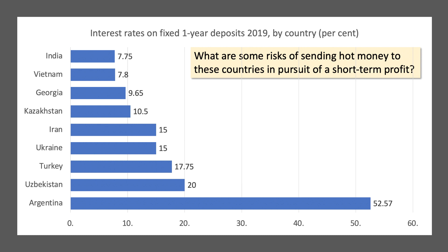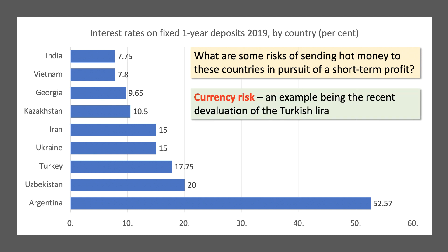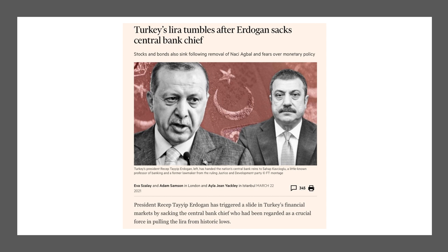Let me suggest three risks. The first is currency risk. You're saving in Turkish lira, the Argentinian peso, the Vietnamese dong, or the Indian rupee. The risk is that the currency could depreciate or devalue and you could lose money. A great example is the recent devaluation of the Turkish lira following the sacking of the Turkish central bank's chief by President Erdogan — the Turkish lira fell something like 13% to 15% in a matter of minutes. So there's currency risk.